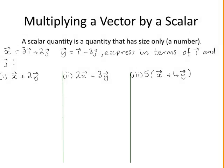How do you multiply a vector by a scalar? A scalar quantity is a quantity that has size only — it has no direction. Therefore, it is just a number. When multiplying a vector by a scalar, you obey the basic laws of algebra.